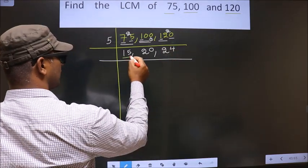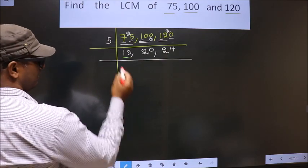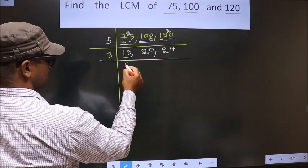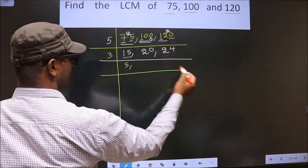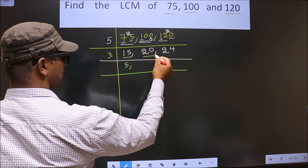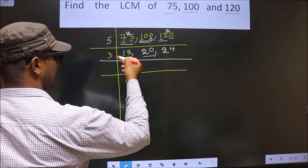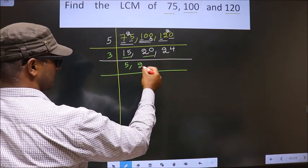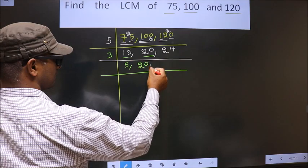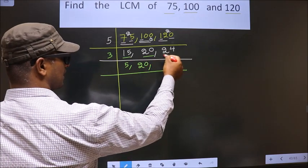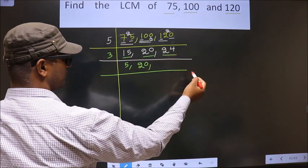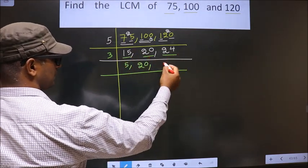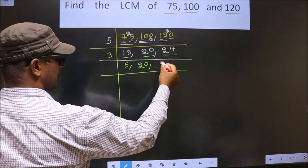Now we have 15. 15 is nothing but 3 fives are 15. The other number is 20 — 20 is not divisible by 3, so we write it down as it is. The other number is 24. When do we get 24 in the 3 table? 3 eights are 24.